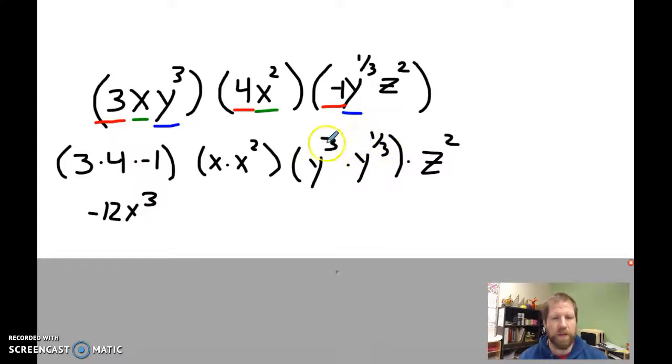So this is actually going to be y to the, and we don't want to use this as a mixed number. We want it as an improper fraction. So y to the 10 thirds z to the second.